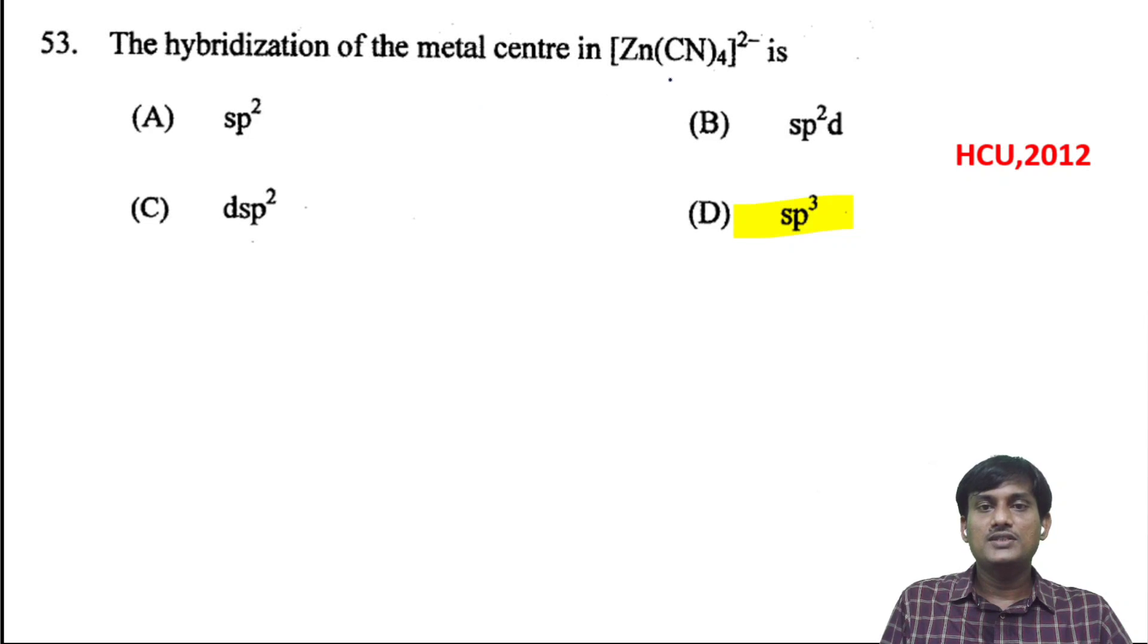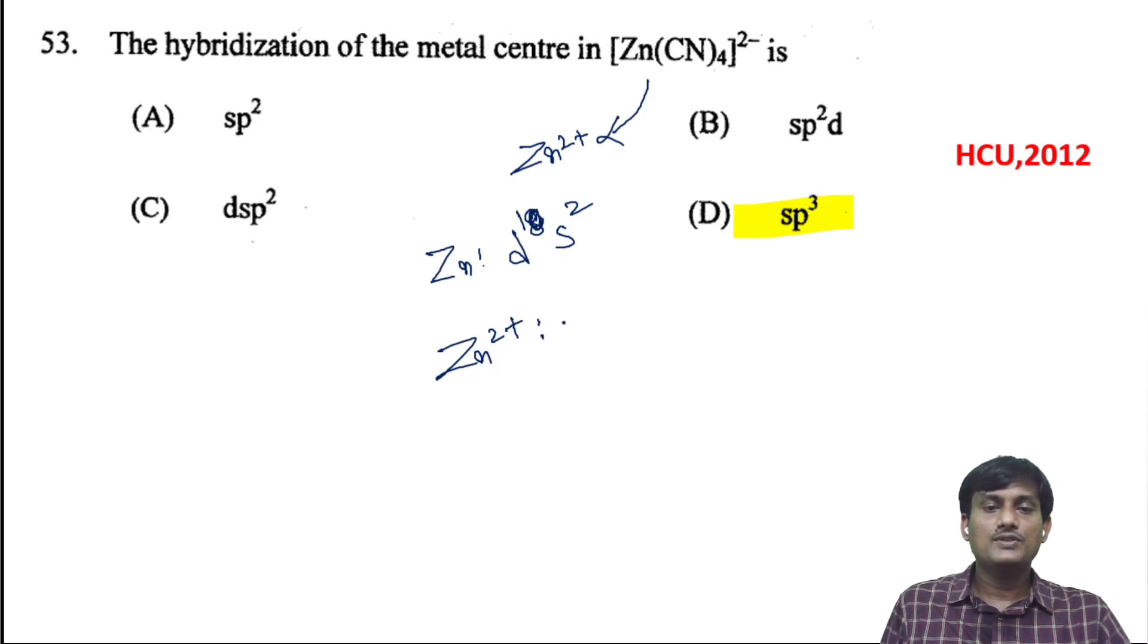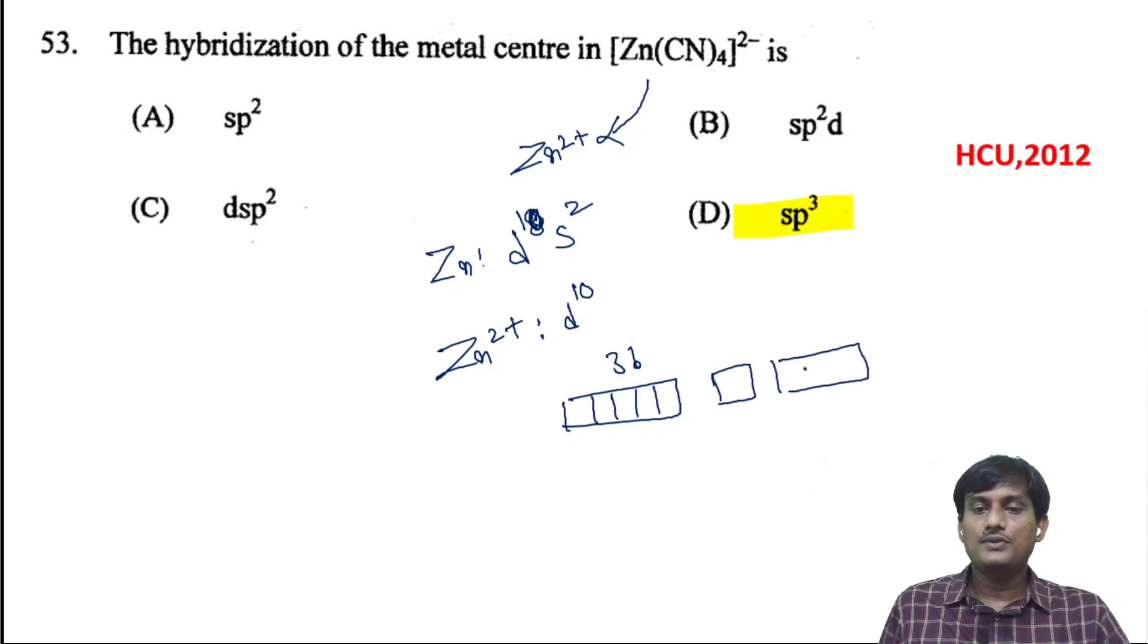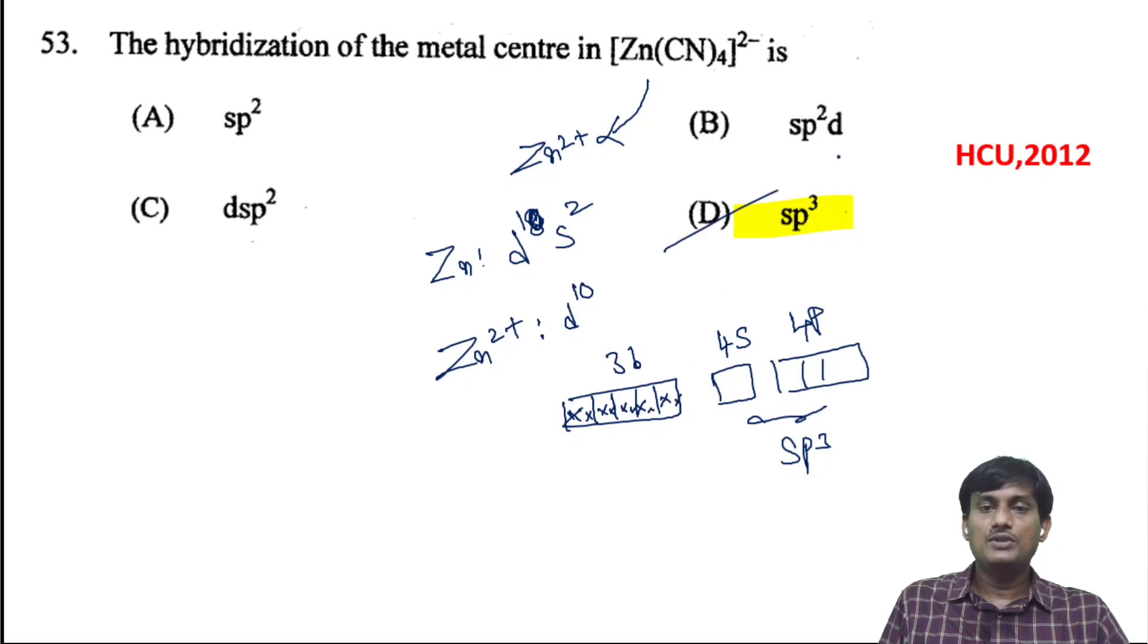The hybridization of the metal center in Zn(CN)4^2-. Here, the oxidation state of zinc is +2. The electronic configuration of Zn is 3d^10 4s^2. For Zn^2+, it's 3d^10. Since 3d is filled with electrons, there is no availability of d orbitals. So there is a participation of one 4s orbital and three 4p orbitals, giving SP3 hybridization.